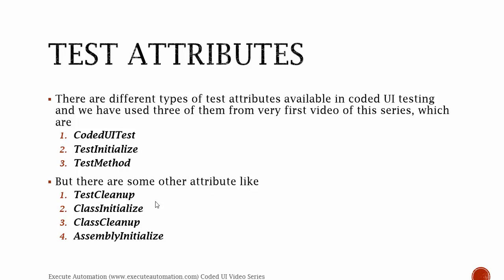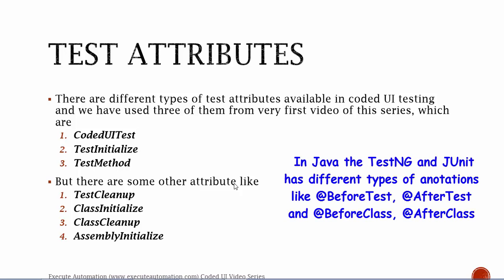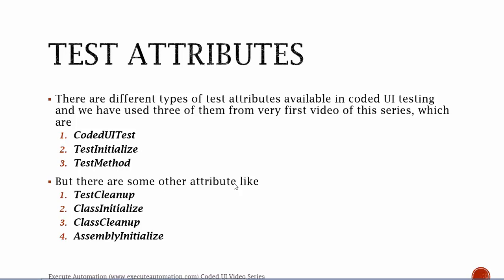But there are some other attributes like TestCleanup, ClassInitialize, ClassCleanup, and AssemblyInitialize. If you are very familiar with Java, then you will be very familiar with these attributes as well. In Java, with JUnit and TestNG, we have different types of annotations available like @BeforeTest, @AfterTest, @BeforeClass, @AfterClass, @BeforeMethod, @AfterMethod, and @Test. These test execution frameworks available in Java can be used to run different types of test methods in a sequence or specific order. Similarly, in Coded UI testing we have these kinds of different types of attributes available.